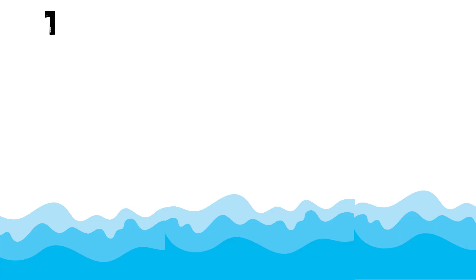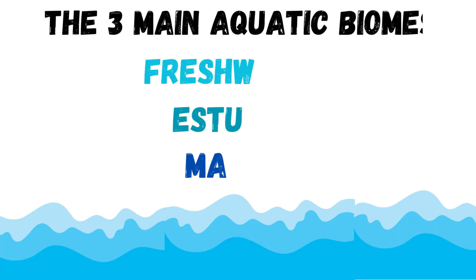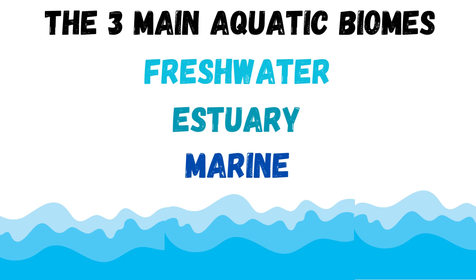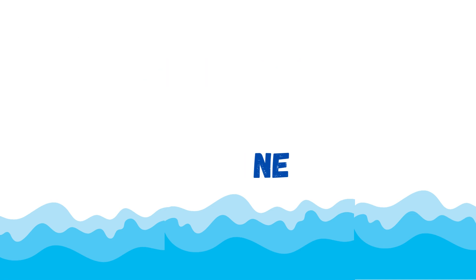So first of all, what are the 3 main types of aquatic biomes? Well, the 3 main types of aquatic biomes are estuary, freshwater, and marine biomes. I'll break them down in a little bit, but first I'm going to introduce you to why aquatic biomes are amazing.